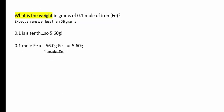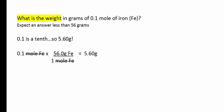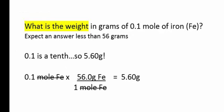What is the weight in grams of 0.1 moles of iron? Well, 0.1 is a tenth. So if one mole was 56, a tenth of 56 is 5.6. And the calculation is laid out as 0.1 times the molar mass.